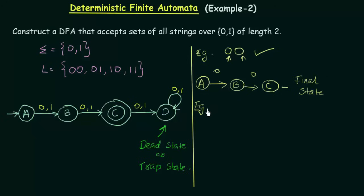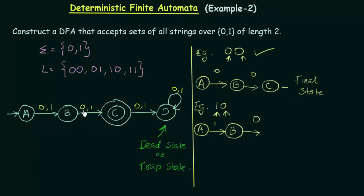Now let's check the string 10. I start from initial state A and the first input is 1. On getting input 1, state A goes to state B. The next input is 0. I am in state B and I get input 0, so it goes to state C. I have reached the end of the string and I am in state C, which is the final state. So 10 is also accepted.